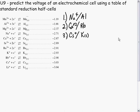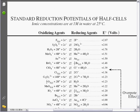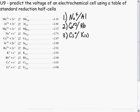Review of electrochemical cells, specifically predicting the voltage of an electrochemical cell using a table of standard reduction half cells. The original table, the standard reduction potentials of half cells you should have. I'll be using this mini table for the following three questions.